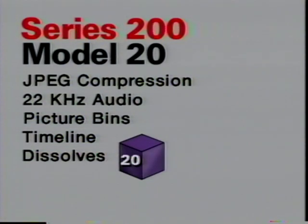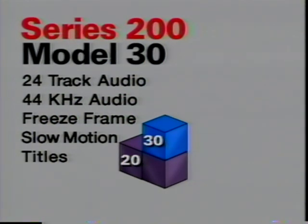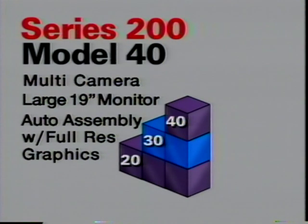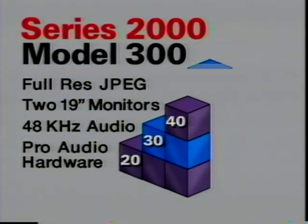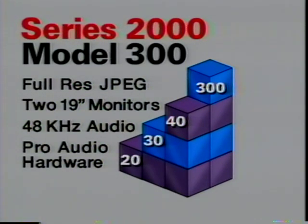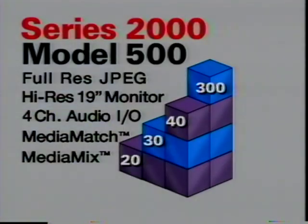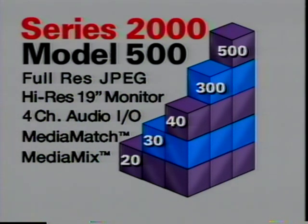For those people, we created the Avid 200 series — our fully upgradable models 20, 30, and 40 — a series of affordable offline systems that offer more performance and features than any other system available today. EDLs, titles, graphics, and program auto assembly are all available, producing pictures superior to VHS from our new phase-change optical disks. Our advanced power line, the 2000 series models 300 and 500, are high-performance, full-resolution media composers using removable hard drive systems for the highest quality full-resolution video. Model 500 also features Media Mix — up to 24 tracks of pro audio — and Media Match, which lets you match back your finished program to its original film negative.